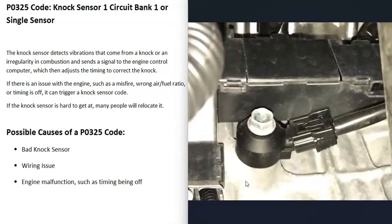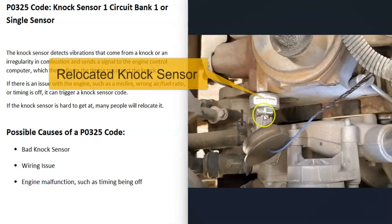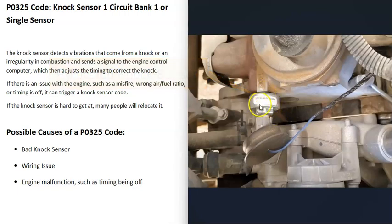Because of this, many people relocate the sensor to an easier spot, like on the front of the block. It needs to be mounted to the engine securely, then they connect the wires from the old knock sensor to the new one. I don't recommend doing it this way, but many people do.